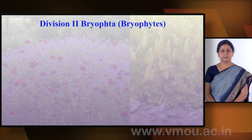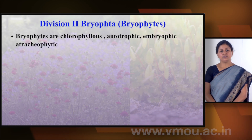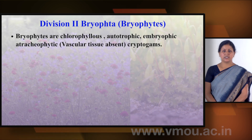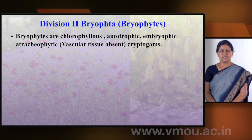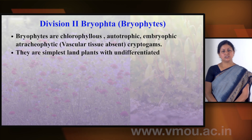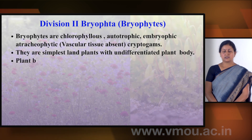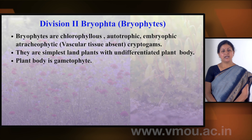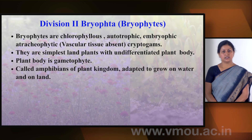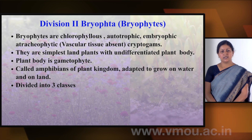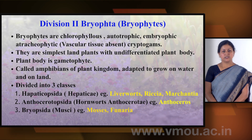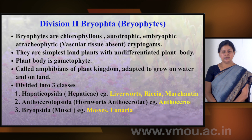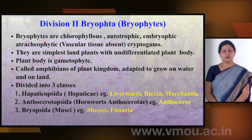The second division is Bryophyta, which includes bryophytes. These are chlorophyllous autotrophic embryophytes — embryophyte means embryo formation occurs. They are atracheophytes, meaning vascular bundles are not found. They are the simplest land plants and are called the amphibians of the plant kingdom. The plant body is in the gametophytic phase. Bryophyta has three classes: Hepaticopsida (liverworts — Riccia and Marchantia), Anthocerotopsida (Anthocerotae), and Bryopsida (mosses — Funaria).